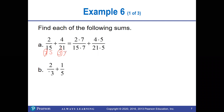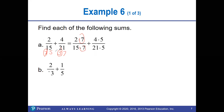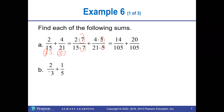Since 15 has a 5 and 21 has a 7, the first fraction has to be multiplied by 7 on top and bottom, and the second one by 5 on top and bottom. This gives us 14/105 + 20/105, which equals 34/105.